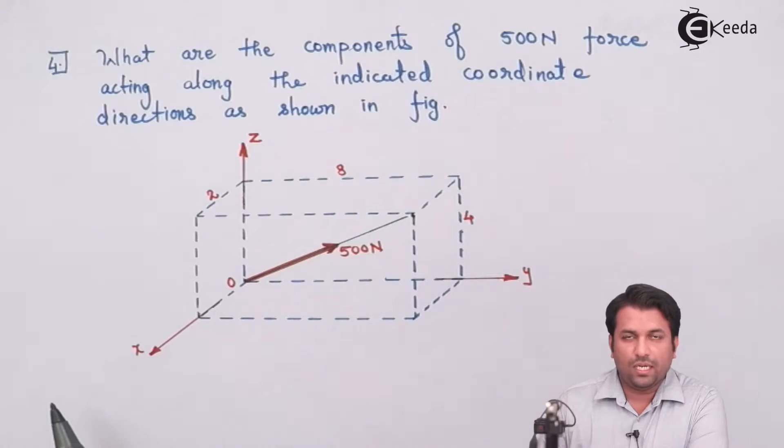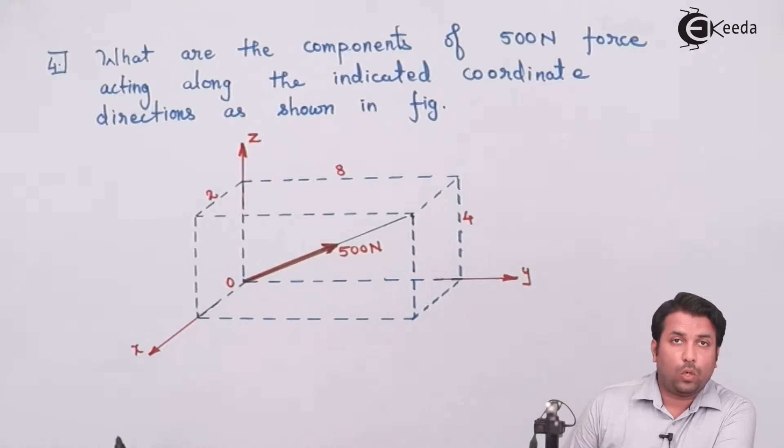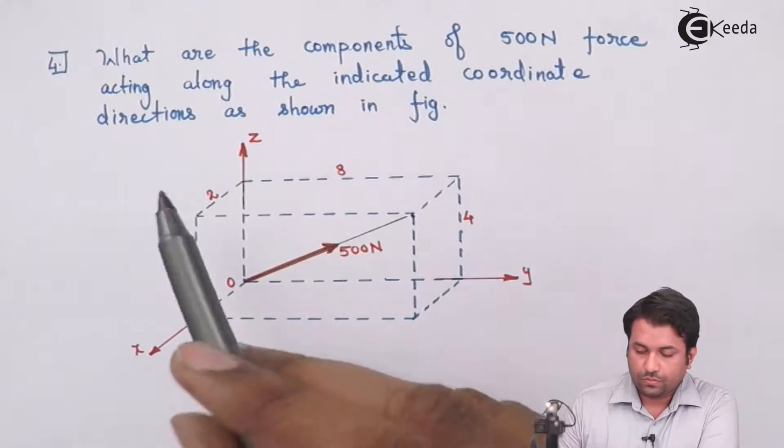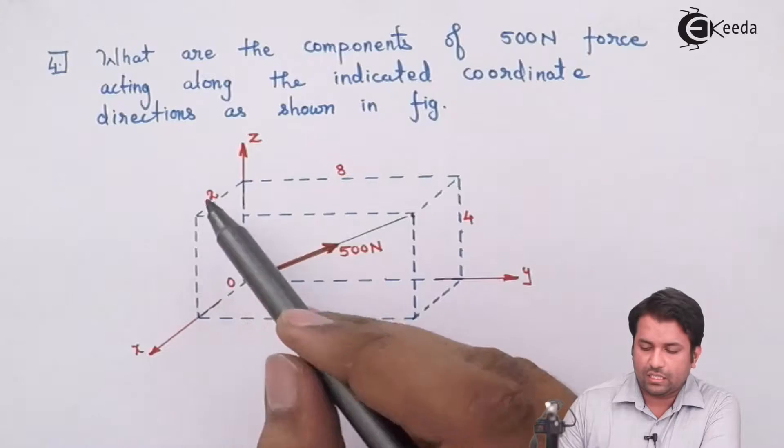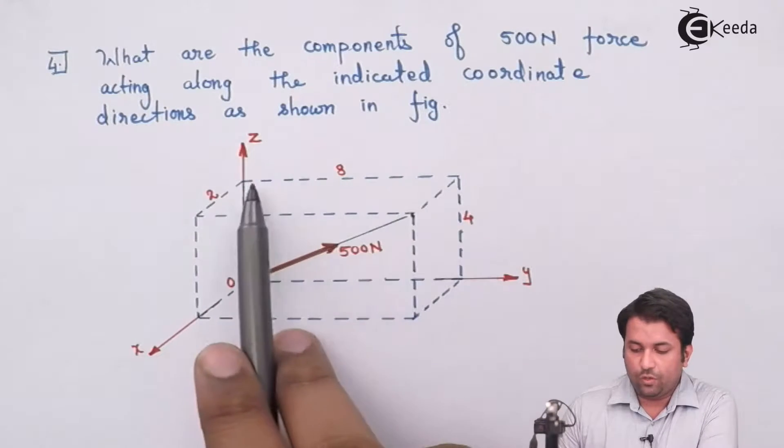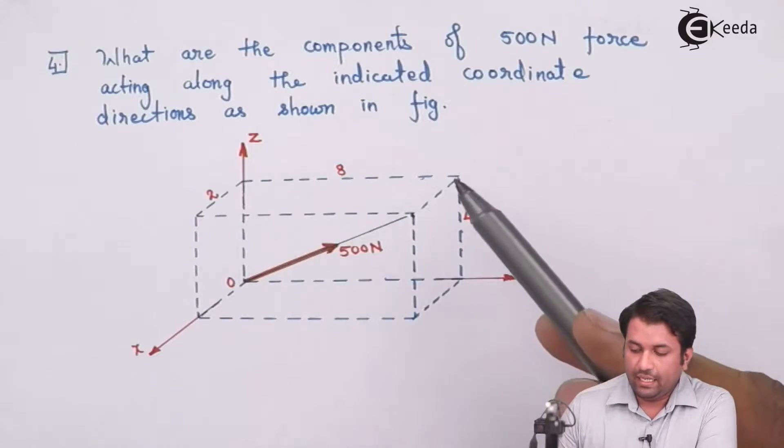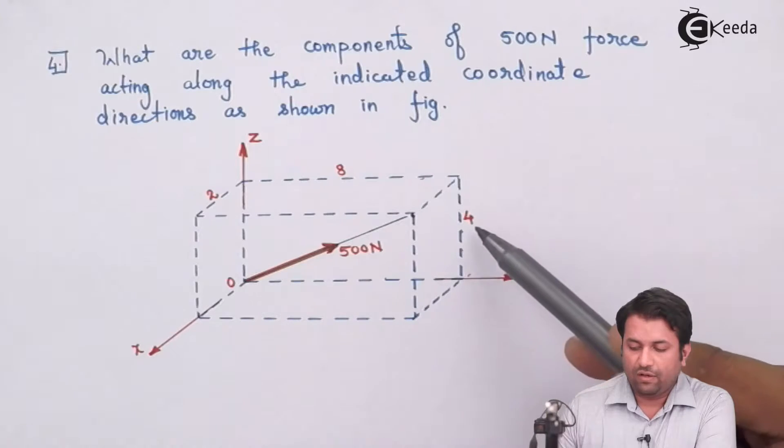So what I need to do is find out the coordinates in this case because I know this length is given to me as 2 units, this length is given to me as 8 units, and this is given to me as 4 units.